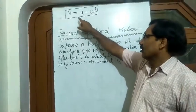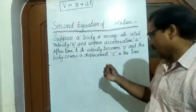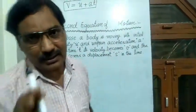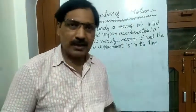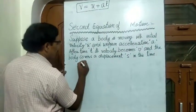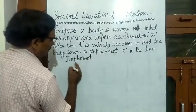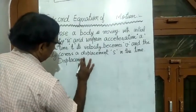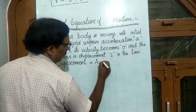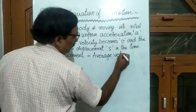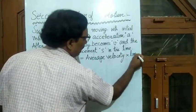In this equation, we have only final velocity, initial velocity, acceleration, and time. Now, how will you calculate the displacement covered by a body in the given time? By definition, displacement is equal to average velocity into time.